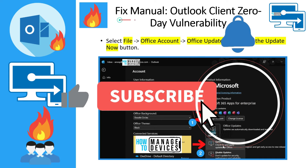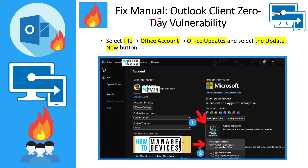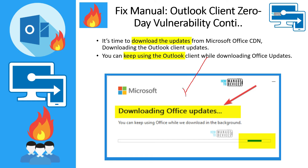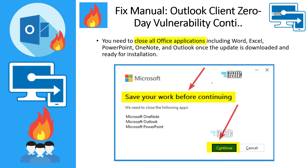Now let's talk about the manual method to update the Outlook application. Even if it is only for Outlook, once you start updating it will trigger updates for all Office applications including Word, Excel, and PowerPoint. Go to File > Office Account > Office Updates > Update Options, click on it, and you will see the Update Now option — click that to trigger the update. As you can see, it is now downloading the updates, and while downloading you can still use Office applications such as Outlook.